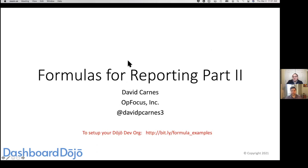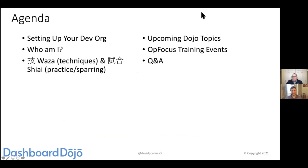My name is David Carnes. I'm the founder and chairman of AppFocus. We also have Kyle Shagnon, who's been amazing helping keep this all organized. Today, we'll cover setting up your dev org, then get into Waza and Shiai — basically techniques and practice in the system. We have four hands-on examples: row-level formulas, pre-group val, parent-group val, and a cross-block formula exercise. We'll also talk about upcoming dojo topics, AppFocus training events, and then Q&A.